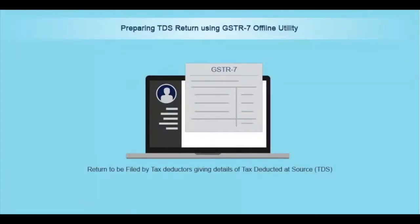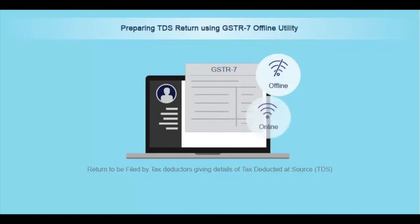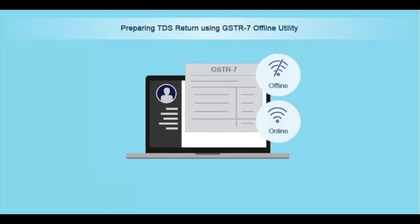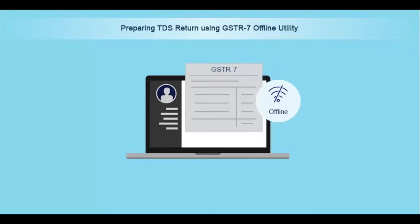GSTR 7 is a return to be filed by tax deductors, giving details of tax deducted at source, also called in short as TDS, paid at the time of making payment to suppliers. GSTR 7 can be filed using the offline utility or directly online on the GST portal. Let's learn how to file GSTR 7 using the offline utility.